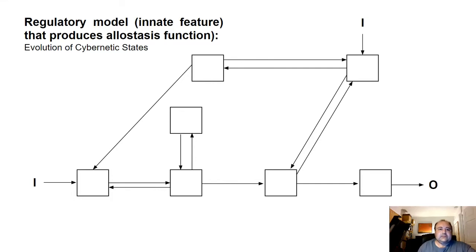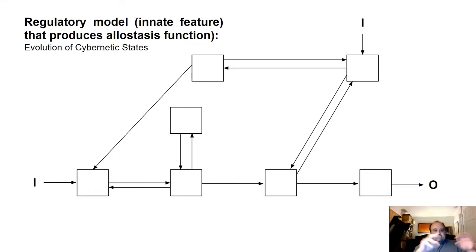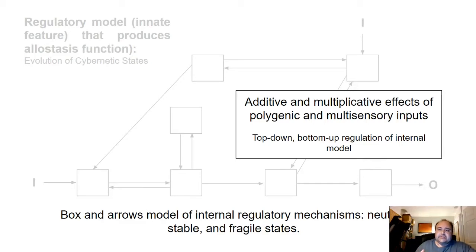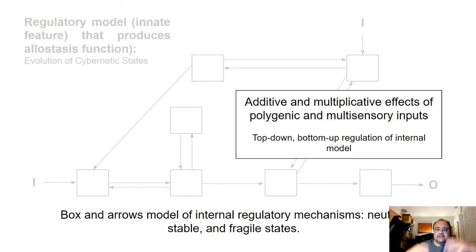One thing we've been experimenting with is using a regulatory model — the evolution of cybernetic states. The internal model is quite complex, involving a number of feedbacks and loops. In an example cybernetic state machine, we add boxes for different functions and arrows for different relationships, which can get quite complex. Multiple inputs can lead to a single output. This models additive and multiplicative effects of polygenic and multisensory inputs — from the genome, from innate sources, and from top-down regulation of multisensory environmental inputs — all merged into an internal model.